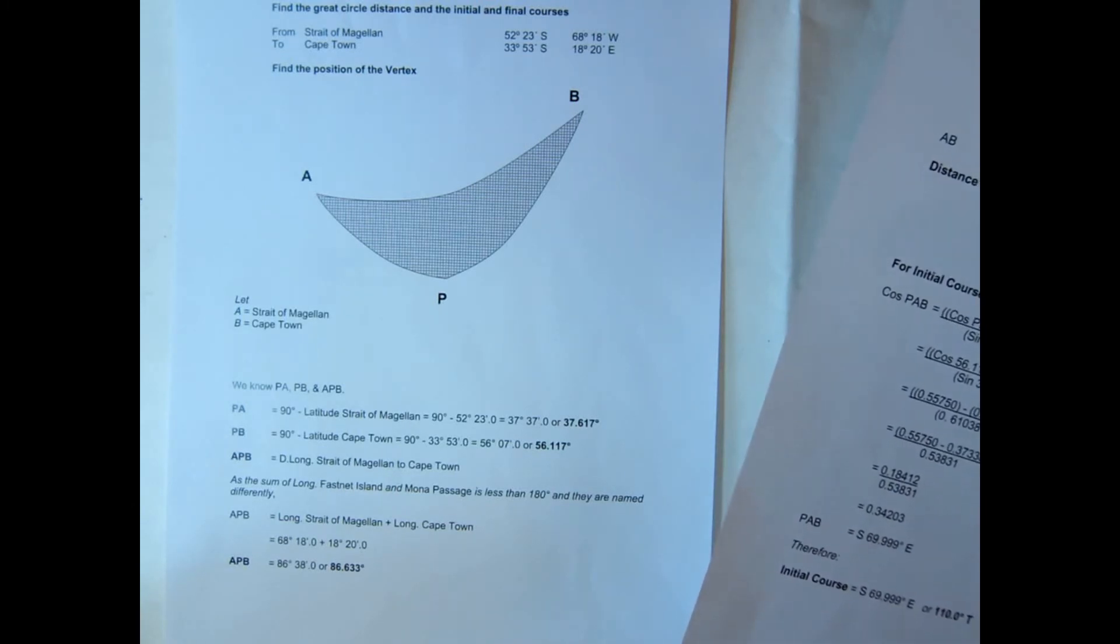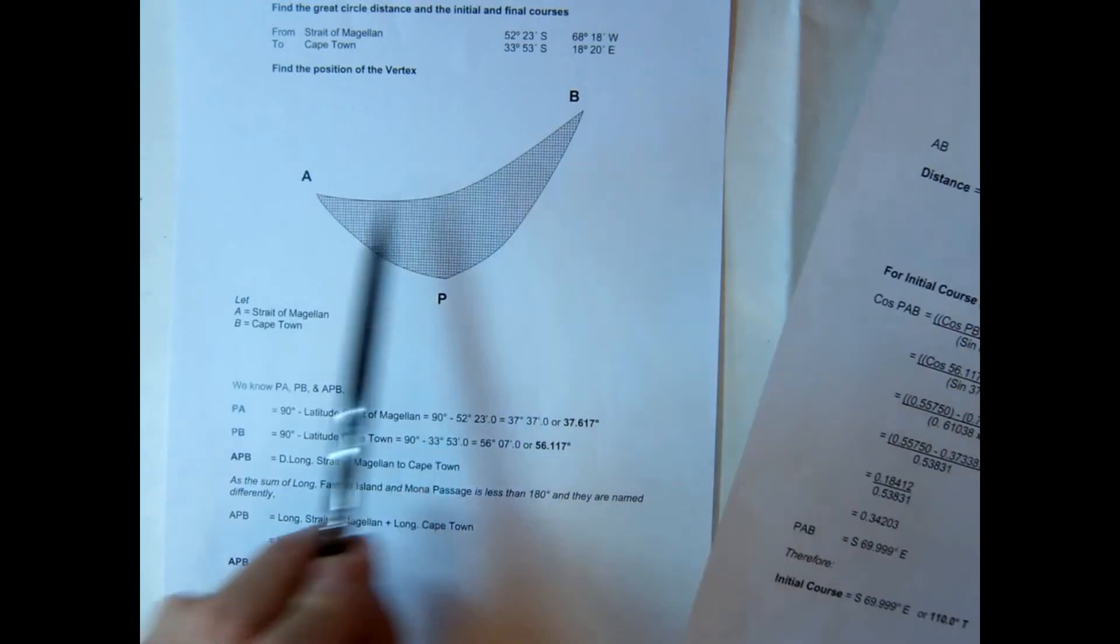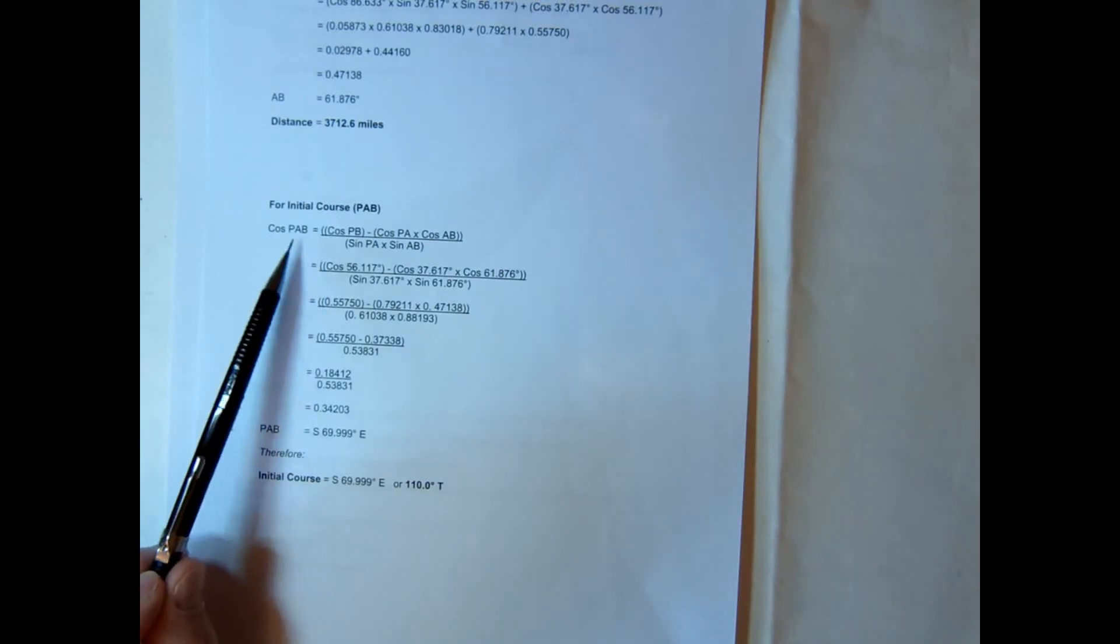Now that's important because regardless of what value you get on your calculator, this will be north east and this will be south east. So here's the formula that we're going to use, the standard formula to find the angle A, and we find that it comes out at